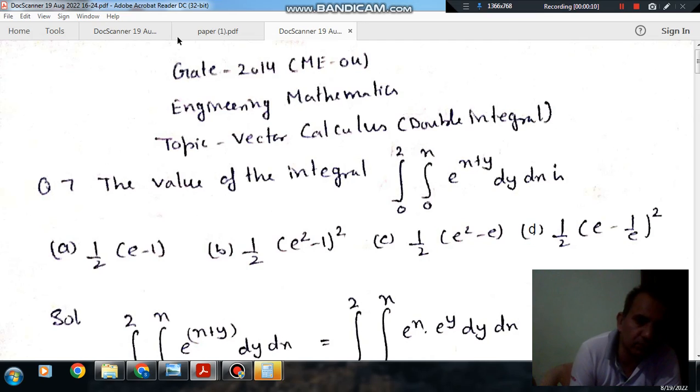Question number 7 from Gate 2014 ME04 is: the value of the integral, limit 2 to 0, x to 0, e^(x+y) dy dx.